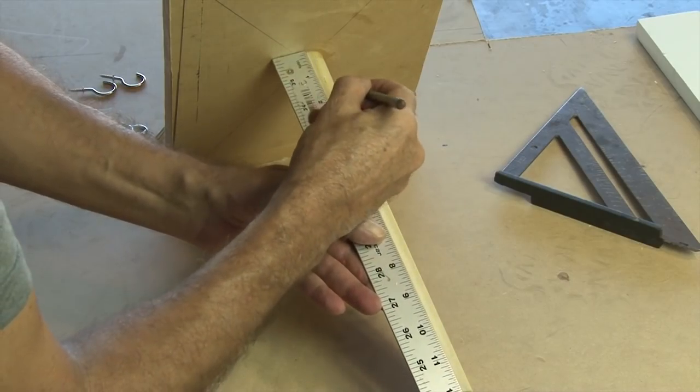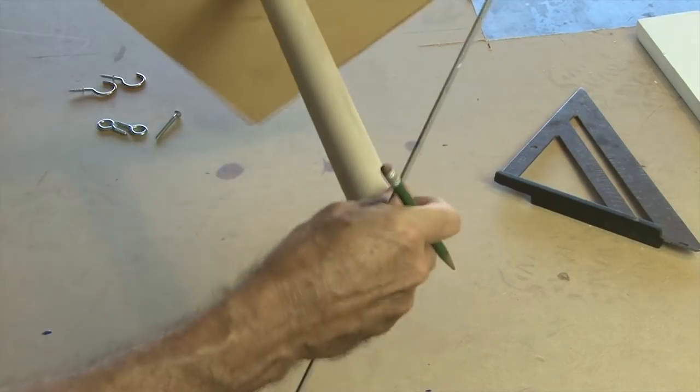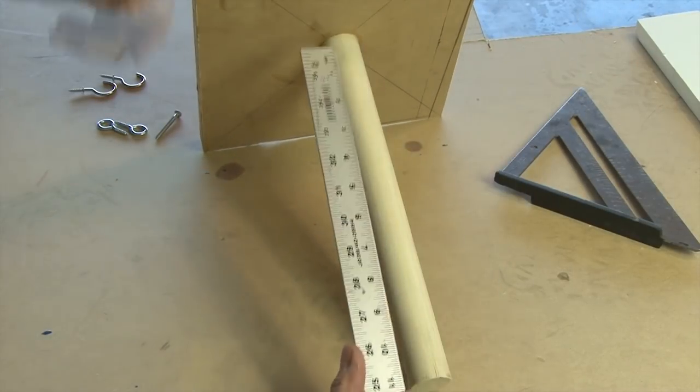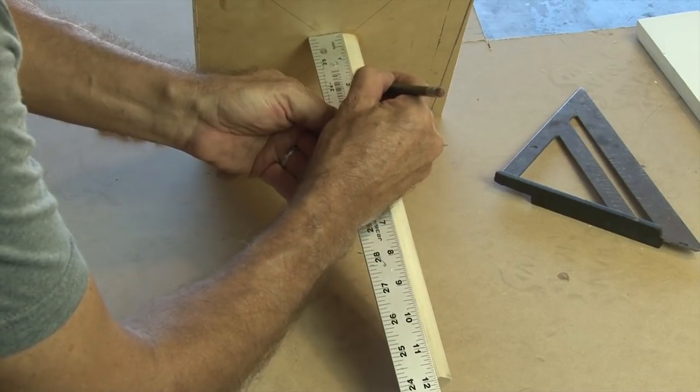We'll need to pre-drill a couple of holes for the cup hooks, so we'll measure up 2 inches from the bottom of the dowel on both sides of it, make a mark, and then drill two small holes on each end.